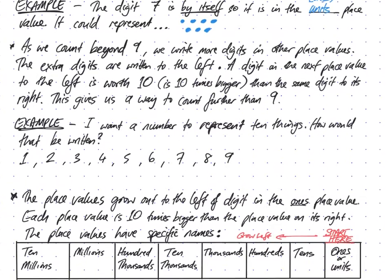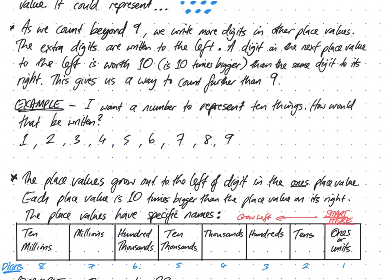But as we count beyond 9, we need to write more digits in other place values. Those extra digits are written to the left. So as we grow beyond 9, we write more digits to the left of the first one. A digit in the next place to the left is always worth 10, or is 10 times bigger than that same digit to its right. This gives us a way to count further than 9.